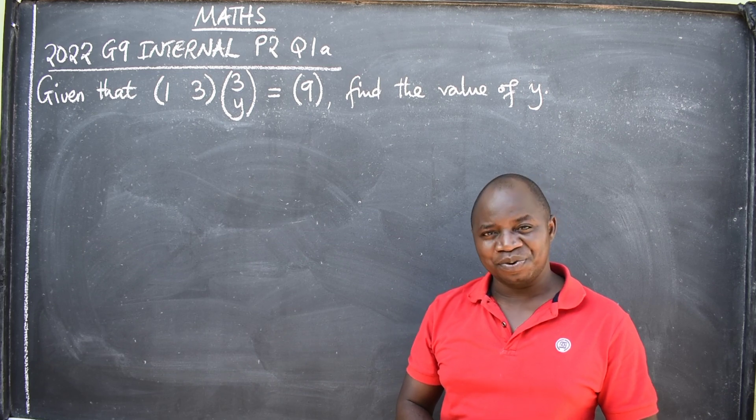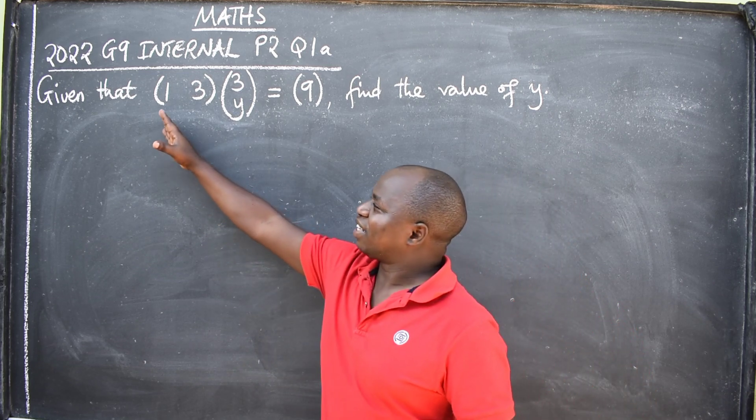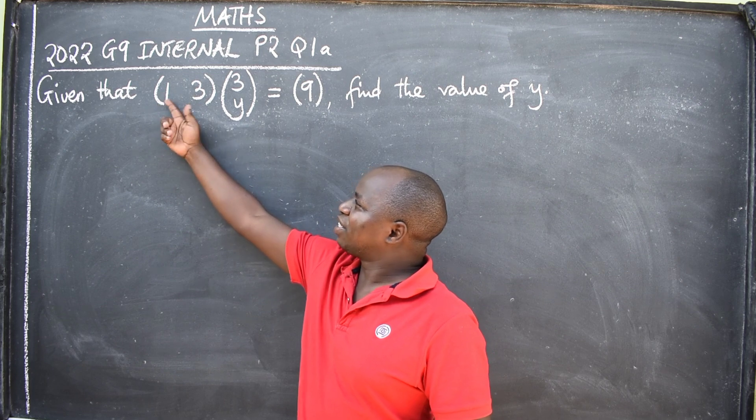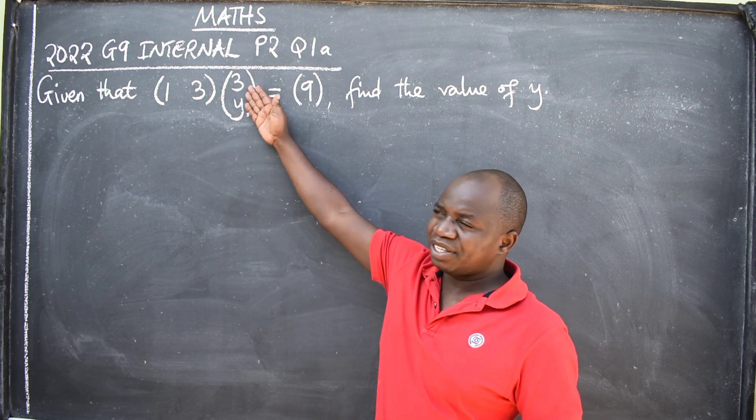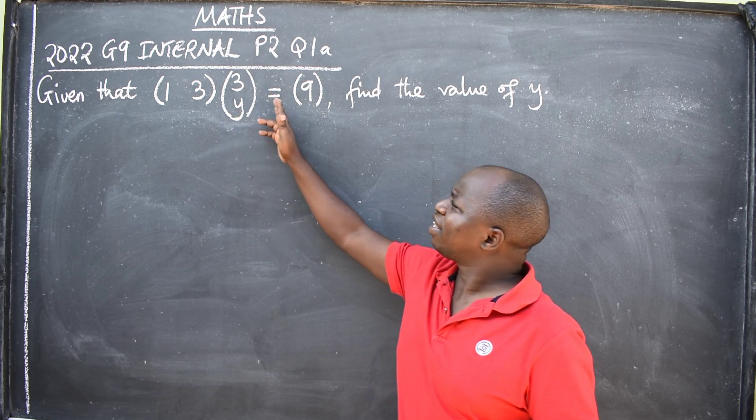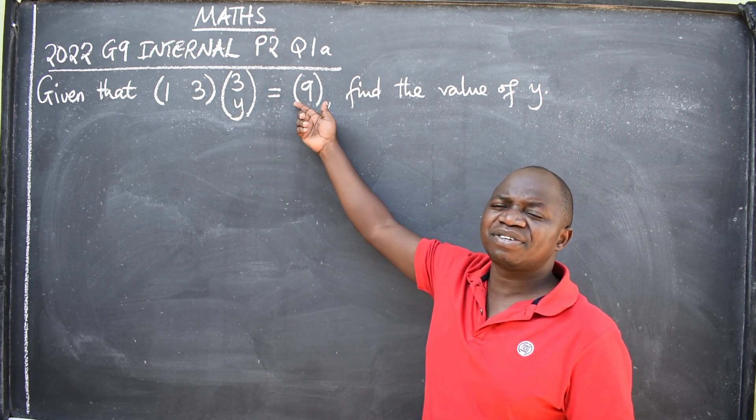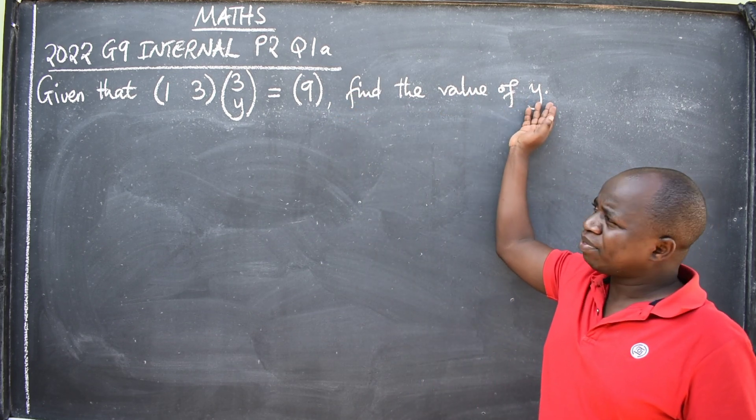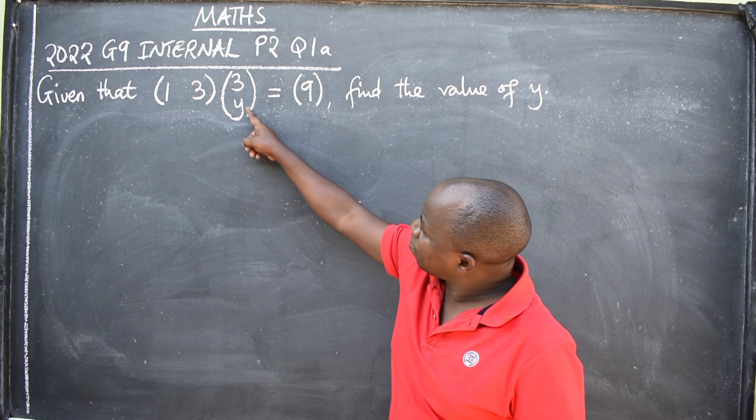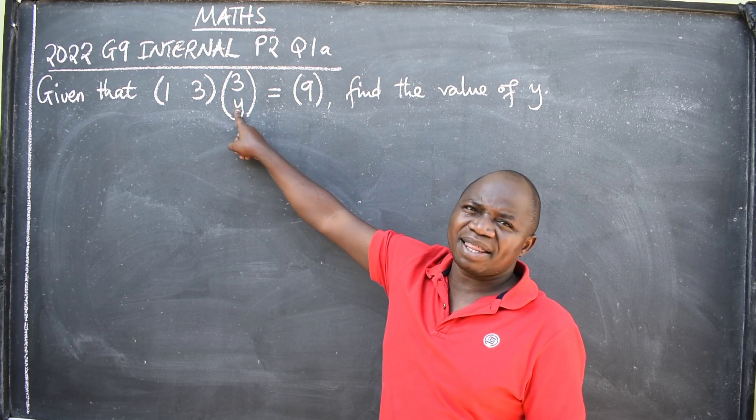Please follow through. So, given that matrix (1 3)(3 y) is equal to matrix (9), find the value of y. They want us to find the value of y, the number that should be here.